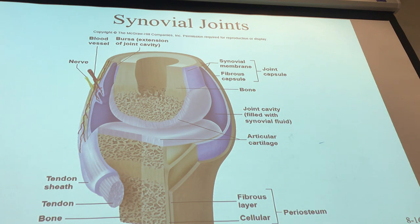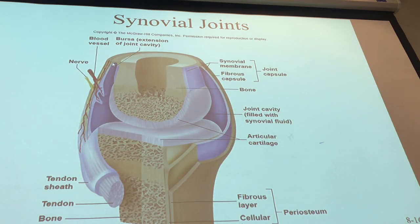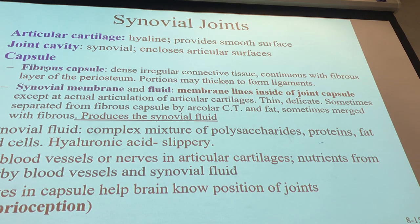We want our joints to have stability as well as mobility, because the last thing you want is to dislocate a finger picking something up. To ensure strength, there's a capsule that connects the distal part of one bone to the proximal part of the other. In our fingers it surrounds our knuckles. The capsule contains a fibrous outer region made of dense irregular connective tissue, providing strength in multiple directions.